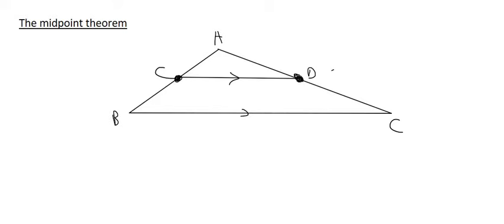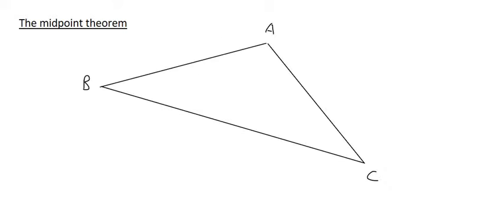So we can try a different triangle, and go ahead and locate the centers once again. That will be approximately over there, and the center of this side will be approximately over there. I'll call those C and D and then connect them. Once again, the midpoint theorem tells us that this line is parallel to that side, and the length of CD will be exactly half of BC.